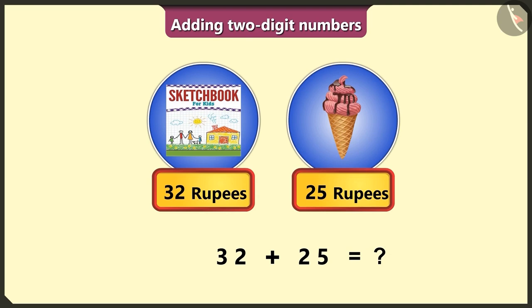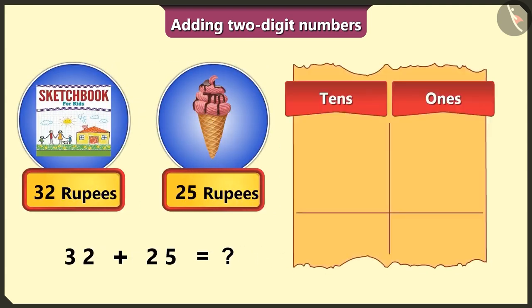You are absolutely right. First of all, from thirty-two, write three in the one box and two in the ten's box. You did the opposite, Bilu.